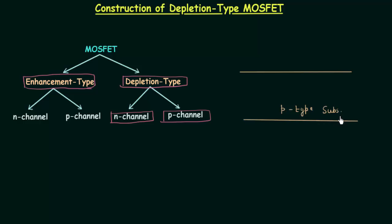The substrate is the foundation or base on which our device is constructed. For the depletion type MOSFET, two n-wells are formed out of this substrate — one will act as the source and the other will act as the drain.